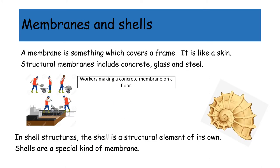Membranes and shells. A membrane is something which covers a frame. It is like a skin. Structural membranes include concrete, glass and steel. In shell structures, the shell is a structural element of its own. Shells are a special kind of membrane. In the picture, you can see workers making a concrete membrane on a floor.